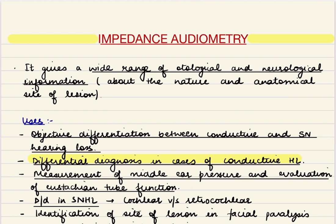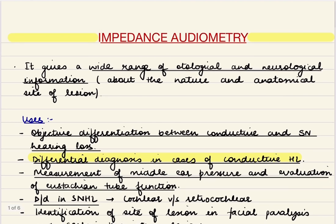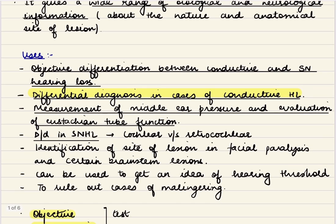This gives us a wide range of otological and neurological information about the nature and anatomical site of the lesion. It objectively differentiates between conductive and sensorineural hearing loss, and one of the most important uses is that we can have a differential diagnosis in cases of conductive hearing loss.